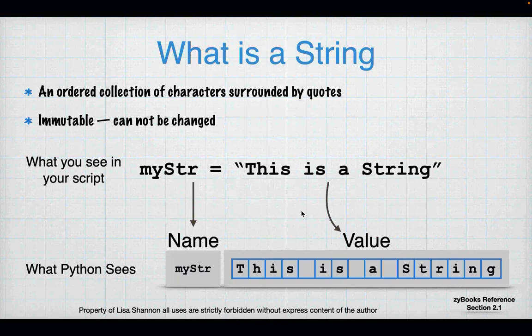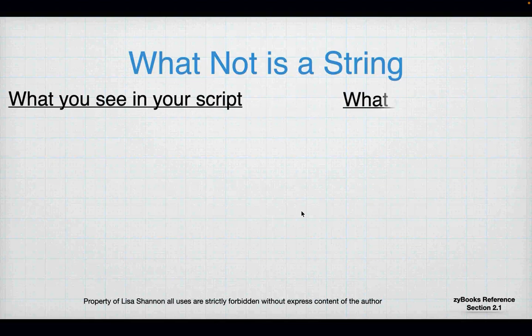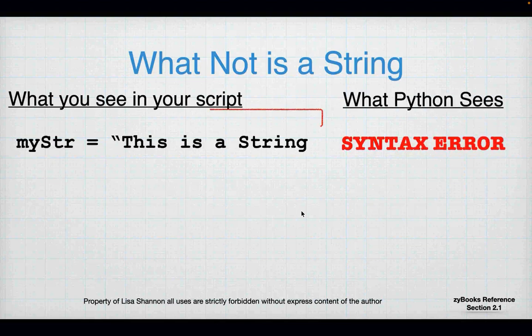Here's a rule: for every open quote you must have an enclosing quote of the same type. Python lets you use either single quotes or double quotes — it doesn't matter — but whatever you opened the string with, you have to close it with. What's not a string: if you're missing the closing quote, Python is going to give you a syntax error, and I'll show you what those actual errors look like in PyCharm because some of them are not intuitive.